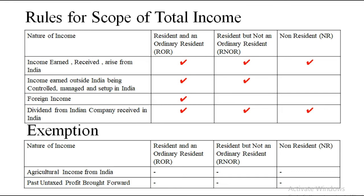If income is earned outside India but it has been controlled, managed and set up in India — those are the three important terms to keep in mind: control, managed and set up in India — the first two categories have to pay tax. And if it's foreign income, only the first person, that is the resident and ordinary resident, needs to pay tax. So: income arising in India — everyone pays; controlled from India — first two people; foreign income — first person only.